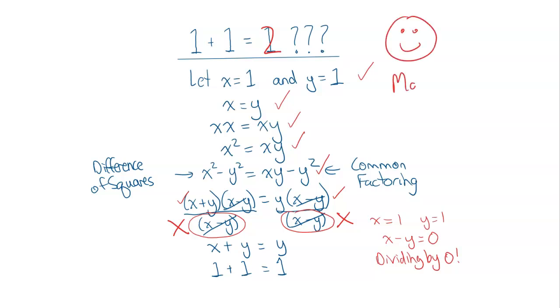So the situation we looked at was x minus 1 in the denominator giving us 0, and we can't divide by 0. So 1 plus 1 still equals 2 — we did not break math, math still works. We have proven why that was a wrong proof and really is not a proof at all. If you found the error in the first video, please leave a comment below, consider subscribing, and give it a thumbs up if you liked it. Thank you.